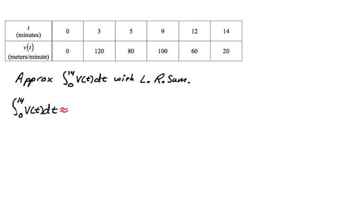First, I'm going to find the width of my first interval. From zero to three, that's three. And then for a left Riemann sum, I'm going to use the value of the function at the left endpoint — so that's zero in this case. So three times zero. Plus, the next width is two, and the left endpoint has a value of 120.